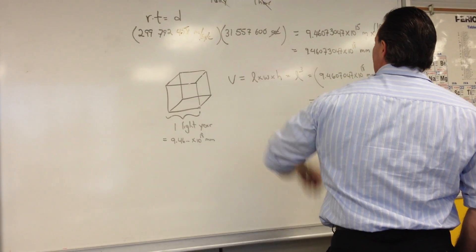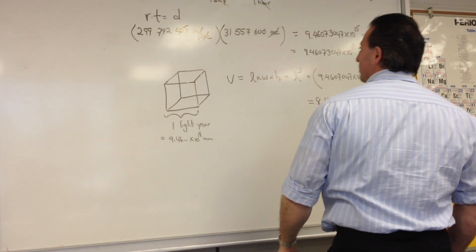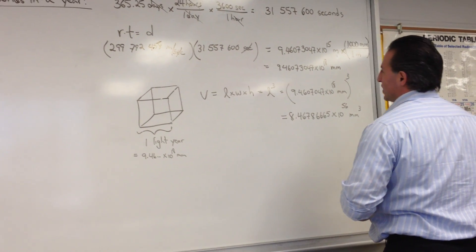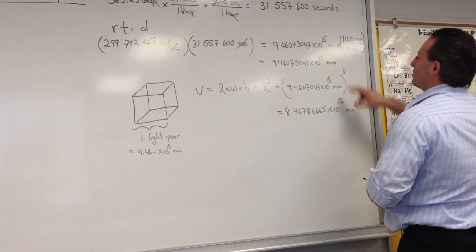So we use the same equation. We cancel for seconds. Our answer is going to be in meters. Light travels 9.46 times 10 to the 15 meters in one year.